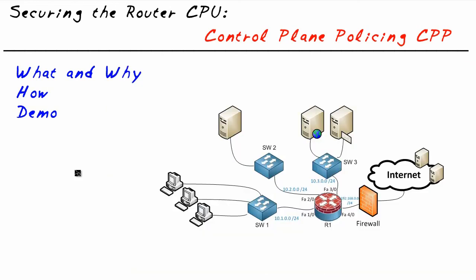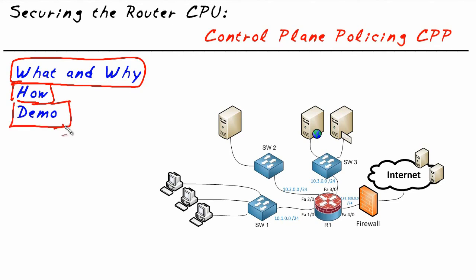In this micronugget, we've taken a look at Control Plane Policing — the why and the what: we do it to protect the CPU, telling the router that within certain limits it's okay, but above that, don't waste CPU power on those packets, just drop them. How to do it: class maps, policy maps, and a service policy applying that policy map to the control plane interface. We did a live demo to cap it off. I hope this has been informative, and I'd like to thank you for viewing.